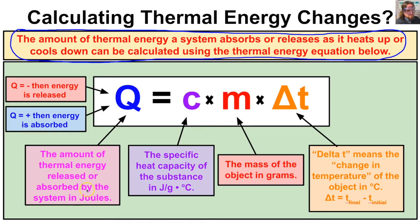Q is the amount of thermal energy released or absorbed by the system, typically in joules. C is the specific heat capacity, typically in joules per gram degree Celsius. M is the mass in grams. And delta T — the Greek letter delta means 'change in' — so delta T is the change in temperature. Let's apply this with Q equals C times M times delta T.